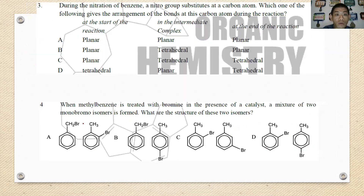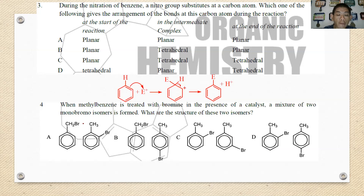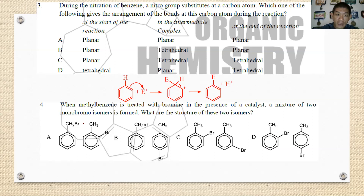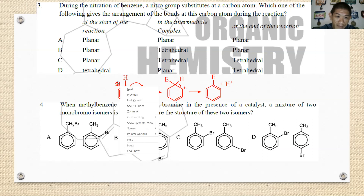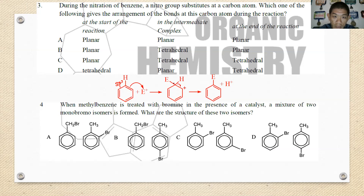Number three: during nitration of benzene, a nitro group is substituted at a carbon. Let's look at the step-by-step mechanism. After benzene reacts with the electrophile — for example, the nitronium ion — an intermediate is formed. This carbon is sp3, so it is tetrahedral. Then upon protonation, it returns to sp2, which is trigonal planar. So the best answer is B: planar, tetrahedral, planar.